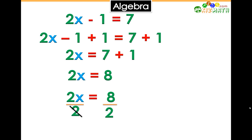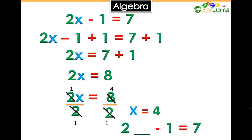Now, when we divide each side, we have x equals 4. To see if we're correct, let's put that back into the equation: 2 times 4 minus 1 equals 7.